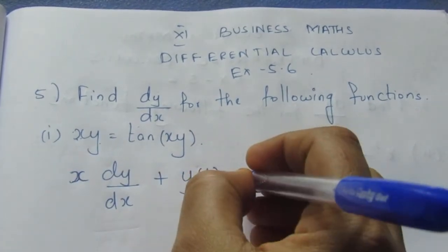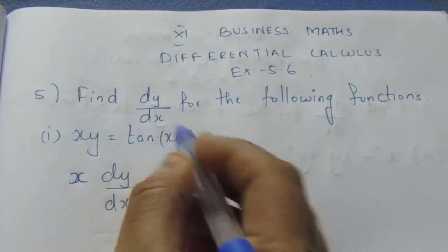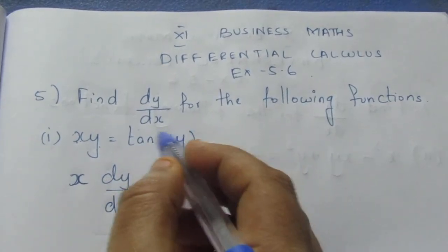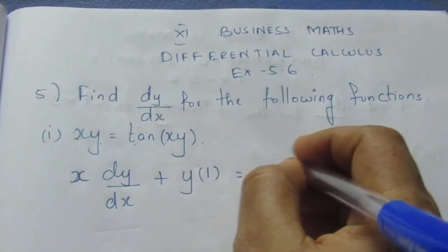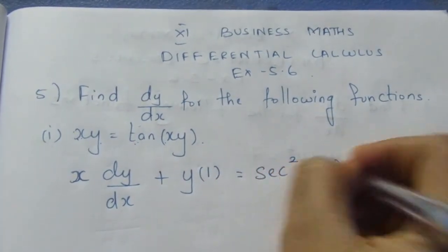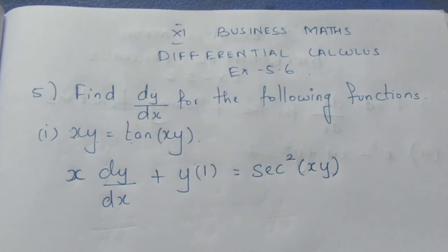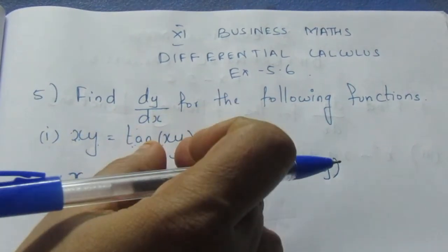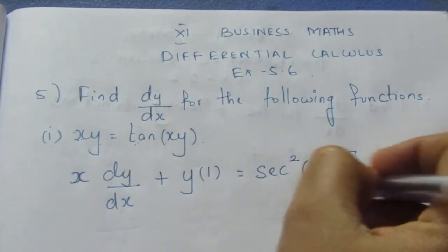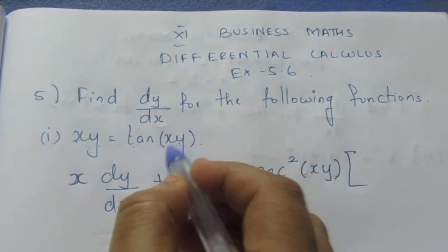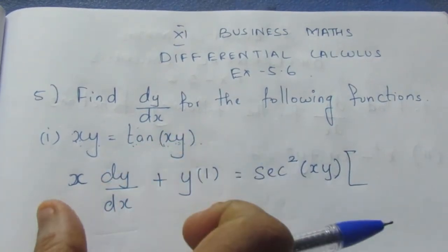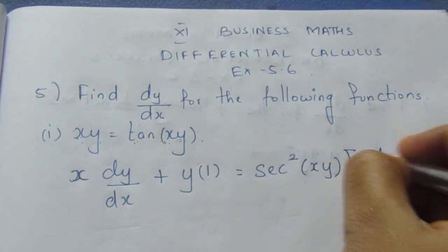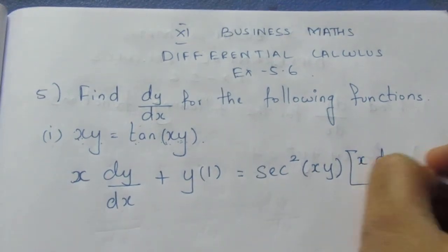On the right side, differentiating tan(xy): the derivative of tan is sec squared. So we get sec squared of xy. Then we also differentiate the inner function xy using the product rule, which gives x dy/dx plus y.